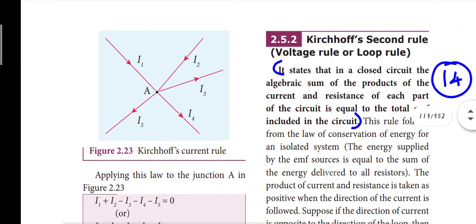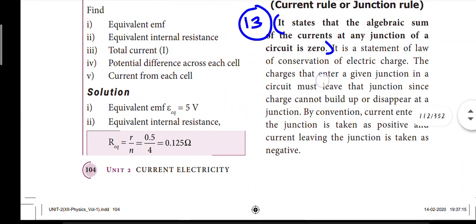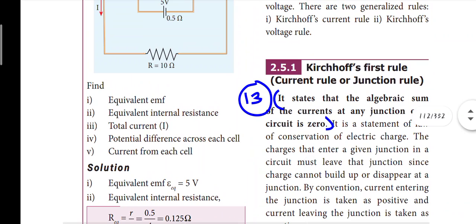Next is Kirchhoff's voltage rule, also called the loop rule, which is the second rule - this is the 14th question answer. The first rule is Kirchhoff's current rule, also called the junction rule.